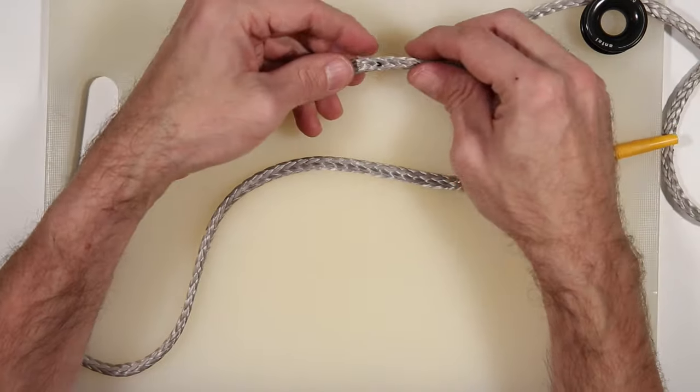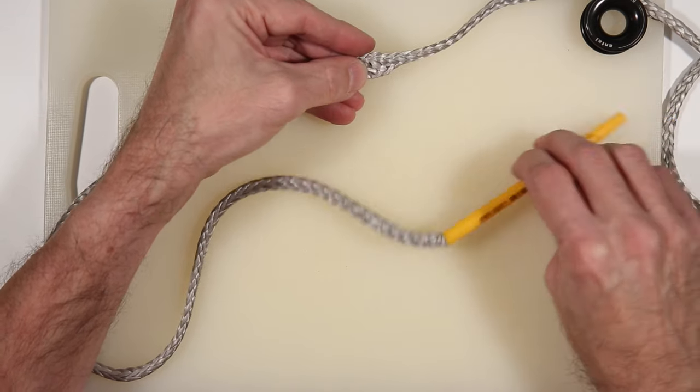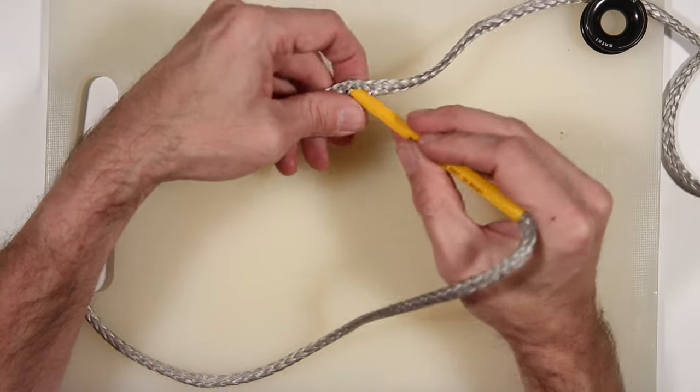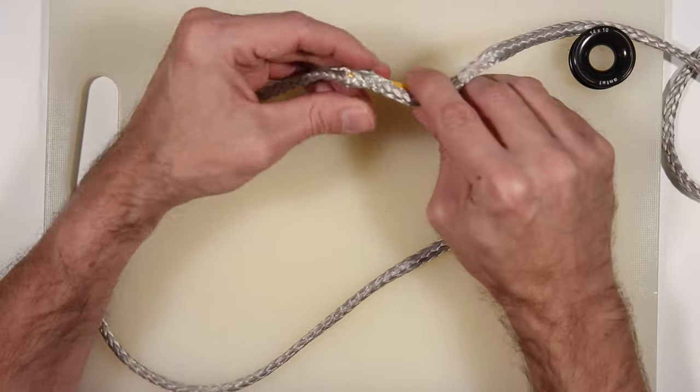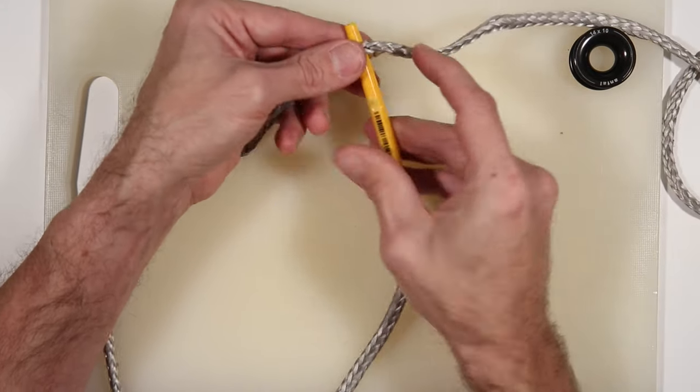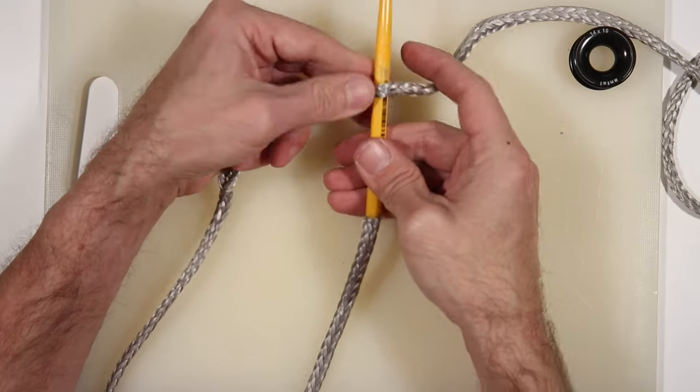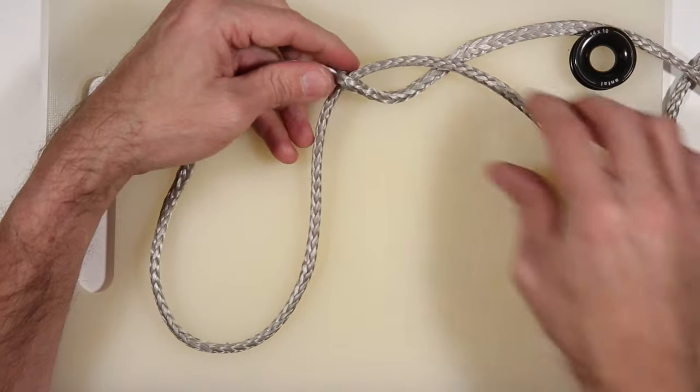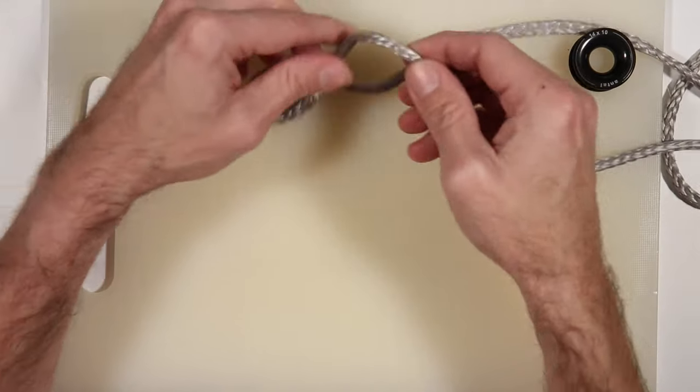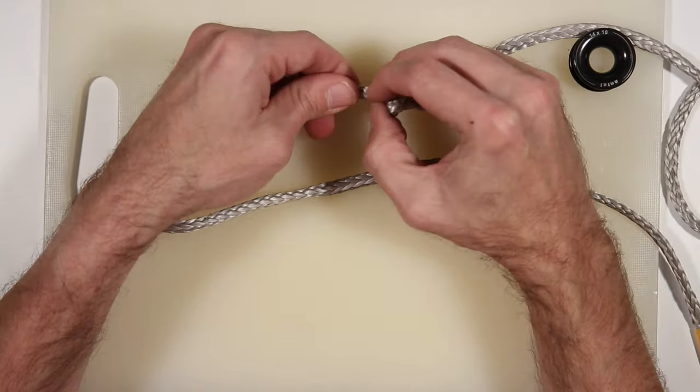At the second mark, do exactly the same. Pull the fibres apart and insert the fid into the rope, and then thread the line all the way through. Be careful not to catch any fibres like I did here. Pull it all the way through until that inverts as well.